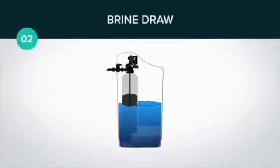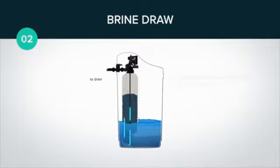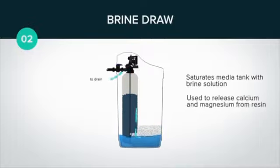Step two is brine draw. This pulls the brine from the brine tank and saturates the media tank with brine that is used to release the calcium and magnesium from the resin.